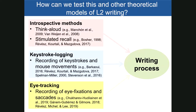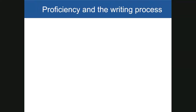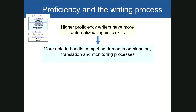So far, writing researchers have used these techniques usually in isolation, or combined two techniques together. Very few studies have combined all three methodologies together. This is something we tried to do in this study, in order to get a more valid and fuller picture of the writing process. We were also interested in the role of proficiency. Based on Kellogg's model, we thought there would be strong relationships between proficiency and writing processes, given that higher proficiency writers have more automatized linguistic skills.